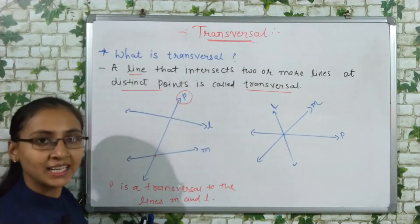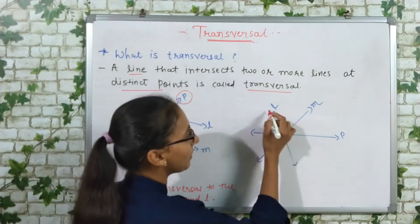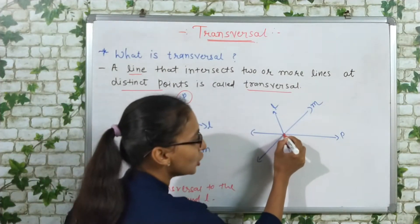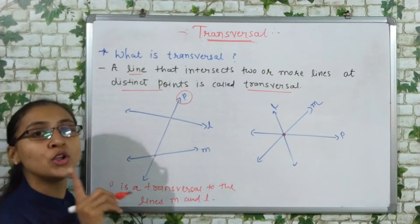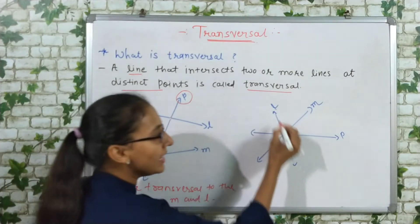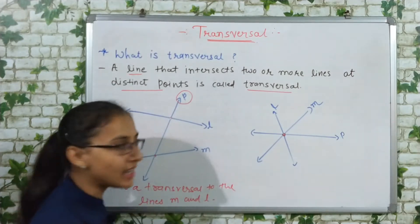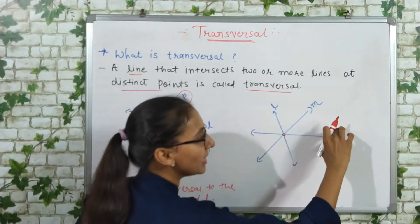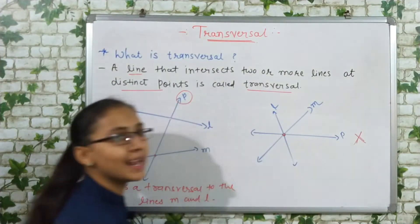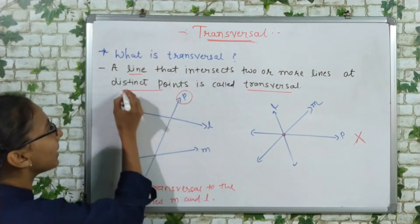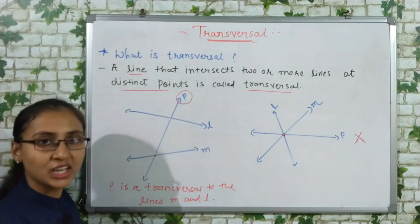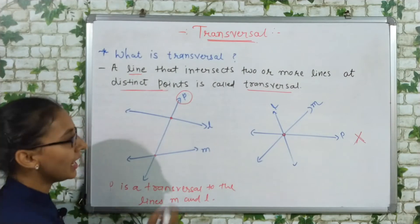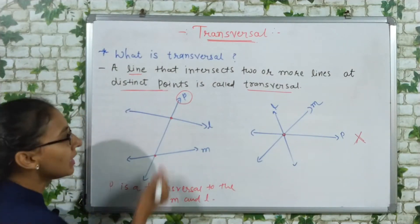Now in the second diagram, we have line l, line m, and line p intersecting them. But the intersection point is only one — it's the same single point for both line l and line m. So here, line p is not a transversal, because it's compulsory that the intersection points must be distinct — both must be separate.